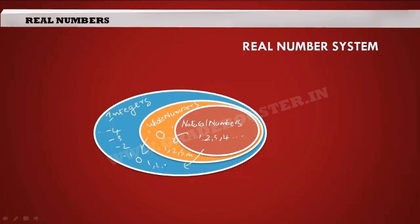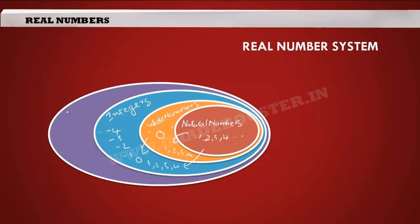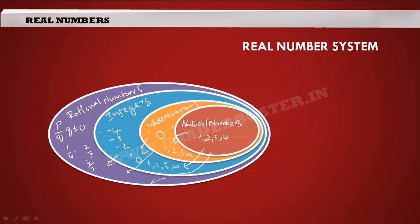So whole numbers are a subset of integers. Integers are a subset of another set called rational numbers. Rational numbers include numbers expressed in the form p/q where q is not equal to 0 — numbers like 1/4, 2/4, 4/7. Rational numbers also include all the integers: 0, positive numbers, and negative numbers. So all the numbers discussed so far are rational numbers.